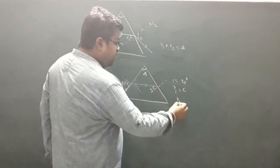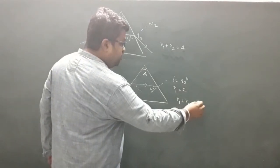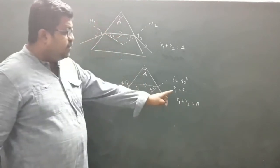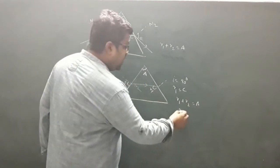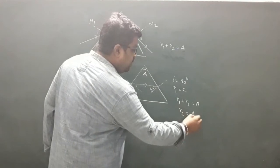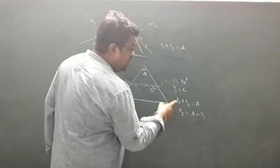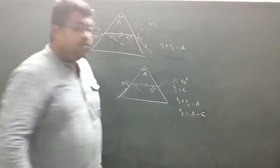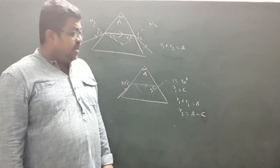Using r1 plus r2 equals A, and since r1 equals C, we get r2 equals A minus r1, which gives r2 equals A minus C.